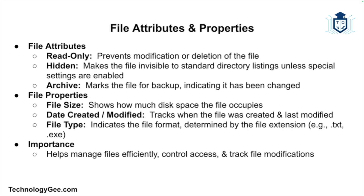Lastly, let's look at file attributes and properties. Attributes and properties provide additional information about a file or directory and control how it behaves. Common file attributes include read-only, which prevents modification of the file; hidden, which makes a file invisible to standard directory listings unless special settings are enabled; and archive, which indicates the file has changed and needs to be backed up. File properties provide more detailed information such as file size, date created or last modified, and file type based on its extension, such as .txt for text files or .exe for executable files.